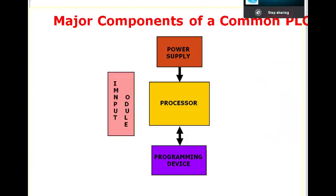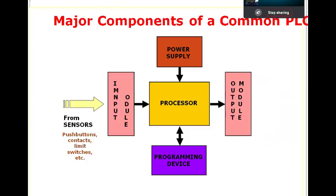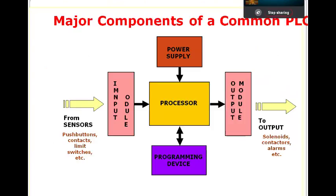The input module is the interface between your field elements — field sensors, field switches — and your PLC. It gets signals from sensors and sends them to the processor. The output module sends output to your final control element. When an analog value comes from a field sensor, the input module converts that analog value to digital using an analog-to-digital converter, because the processor only understands digital.